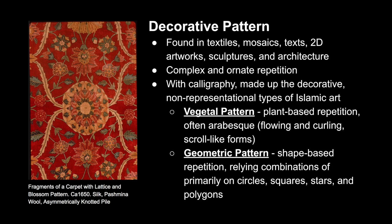There were two primary types of patterns. The first was vegetal, as we see in this example here, which is plant-based repetition. Their style was arabesque, which includes flowing and curling scroll-like forms. The second type of patterns are geometric, and as its name says, it's based in shapes, relying primarily on combinations of circles, squares, stars, and multi-sided polygons.